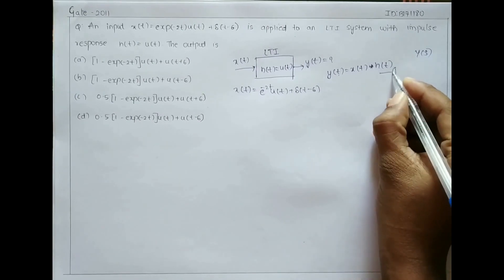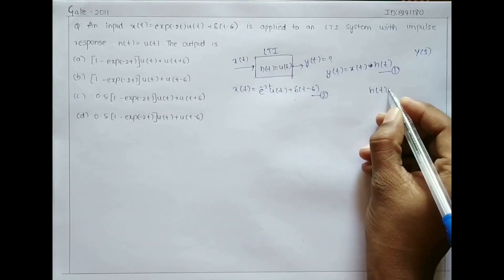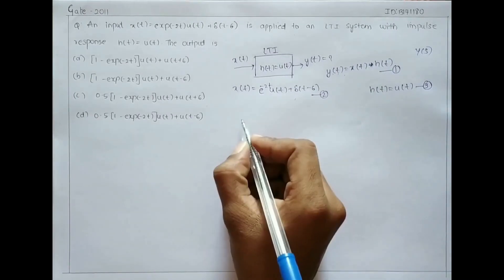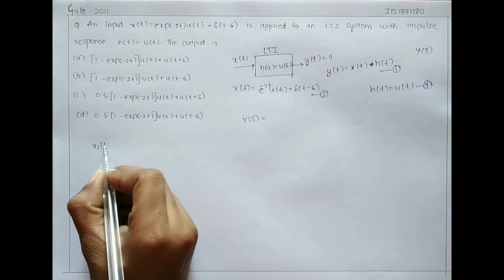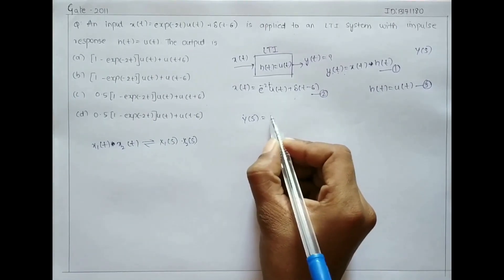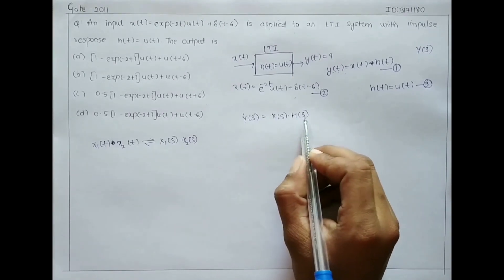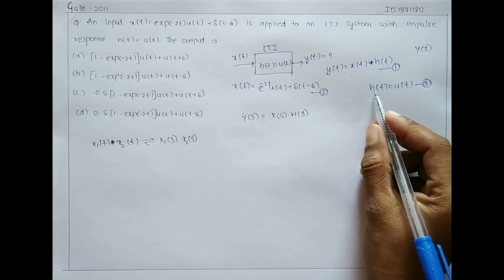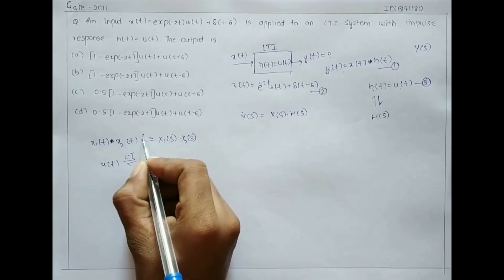Let the convolution equation be equation 1, x(t) be equation 2, and h(t) equals u(t) be equation 3. Applying the Laplace transform to equation 1: Y(s) equals X(s) into H(s), since the Laplace transform of a convolution is the product of the individual transforms. For equation 3, the Laplace transform of u(t) gives H(s) equals 1 by s.